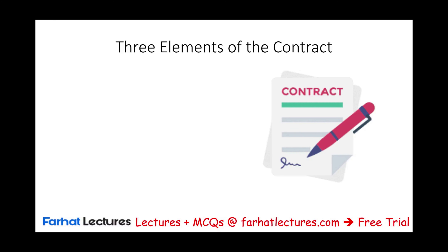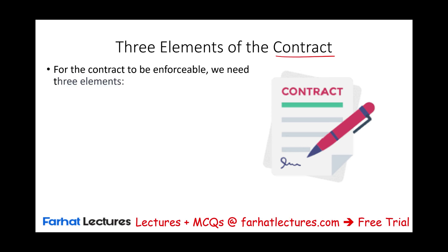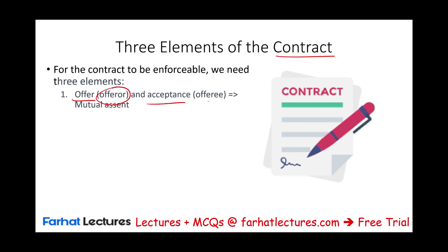Hello and welcome to this session in which we will keep discussing the elements of the contract. To have a valid, enforceable, legal contract, you have to have three elements, and those are an offer and acceptance — an offer by the offerer and an acceptance by the offeree.